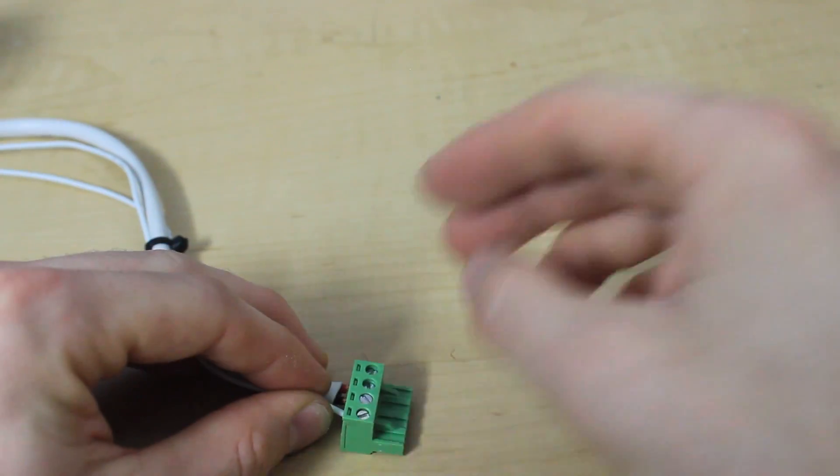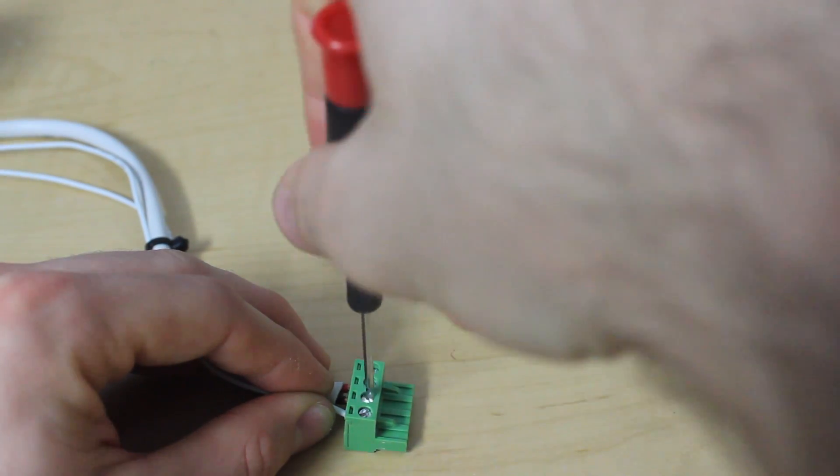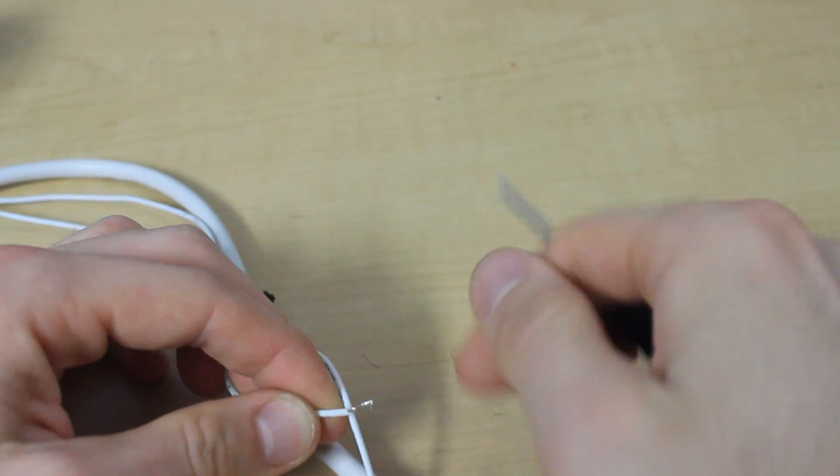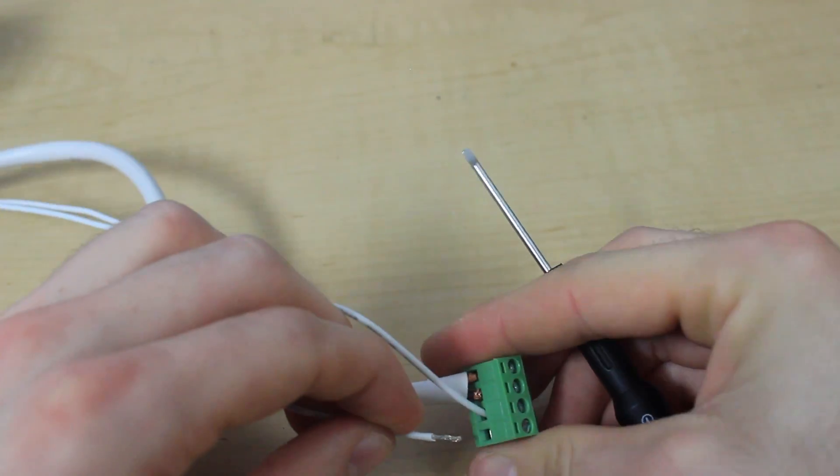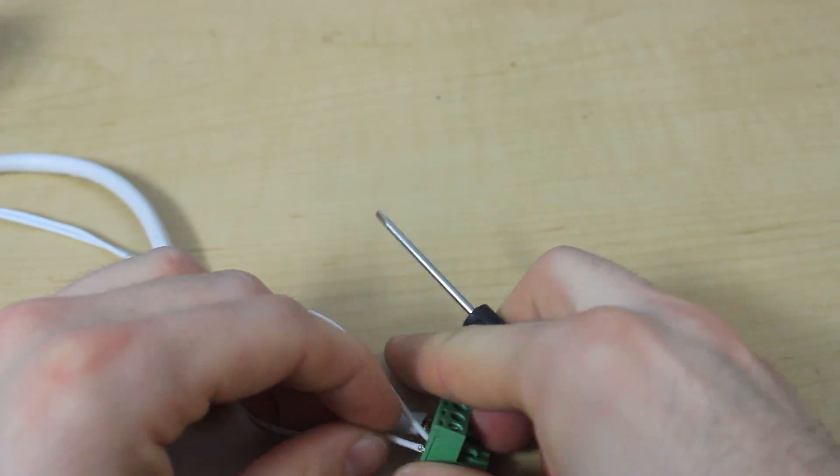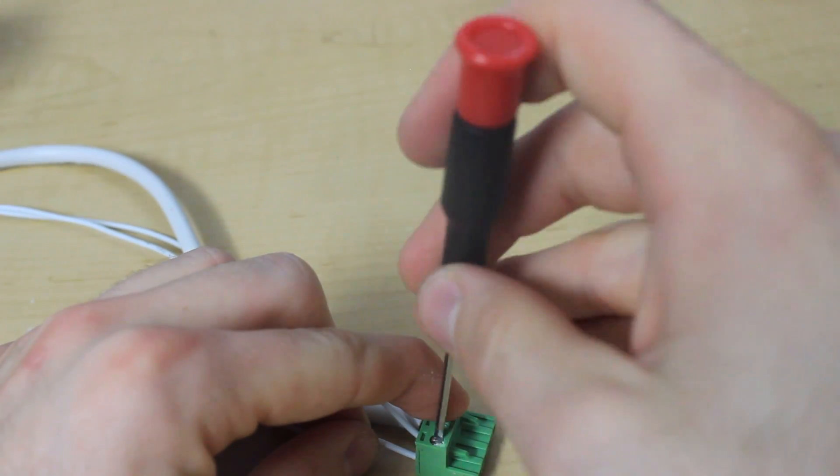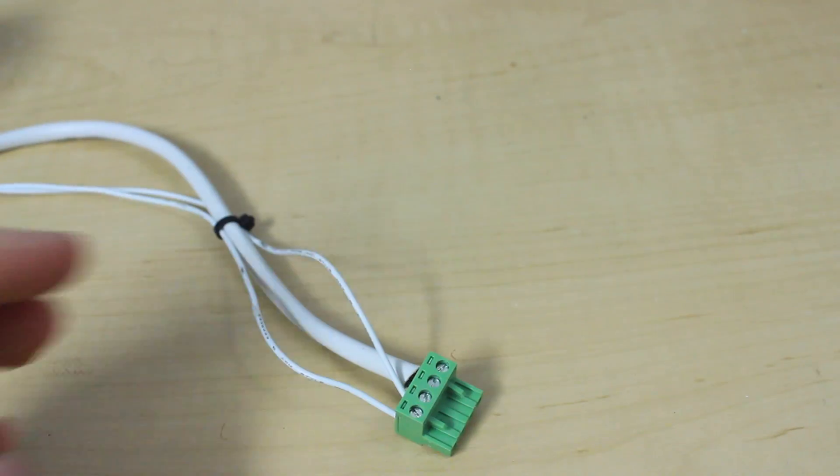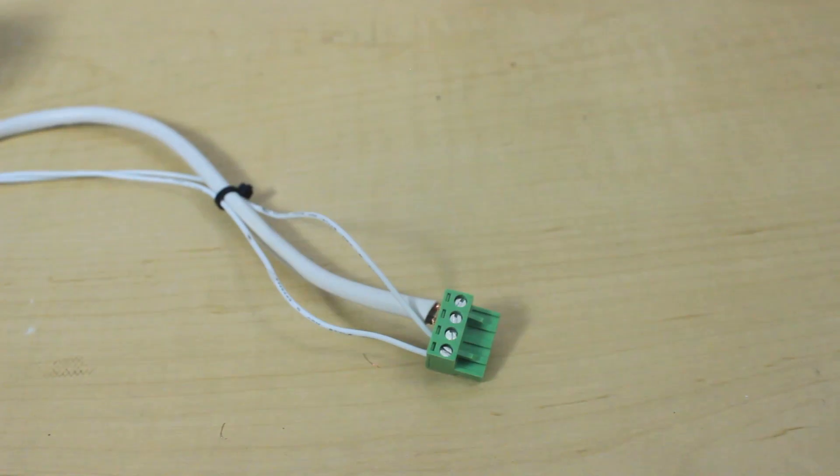So as you can see here, I've got the red and the black thick ones on the top. Then this is the thin red one, and then the thin ground one. Lock those into place. Basically, you've got two different rails or two different on the RAMPS power supply.